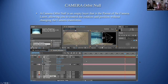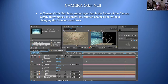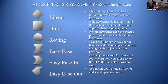A camera orbit null — remember when we made that spinning camera tutorial — is used so the null moves while the camera stays in place and just follows the null's motion. If something's wrong with the motion you can just delete the null and the camera returns to where it was. A camera orbit null is an empty layer that is the parent of the camera layer, allowing you to control rotation and position without changing the camera transforms itself.